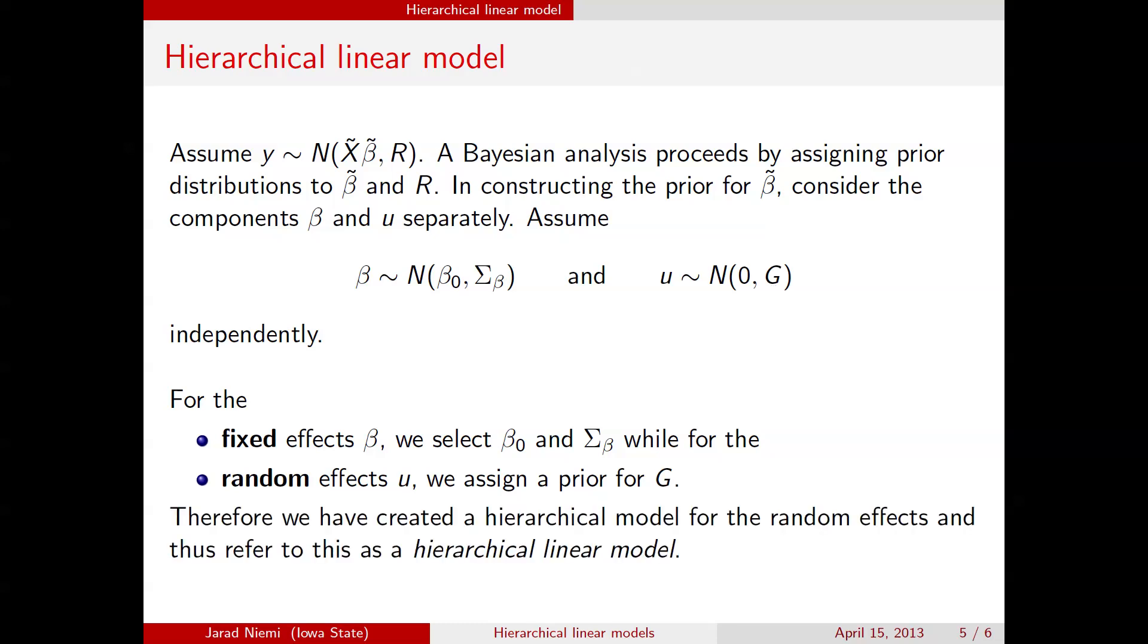And so, perhaps it's clear now that what we've really done is created a hierarchical model for our random effects. It would be not a hierarchical model if we just assigned a value for G and proceeded in the analysis. But instead, we're assigning a prior for G, and therefore, we have a hierarchy. And so, because this is a linear model, where we have these fixed effects and these random effects, and then we put a prior on the variance term for the random effects, we're going to call this a hierarchical linear model.